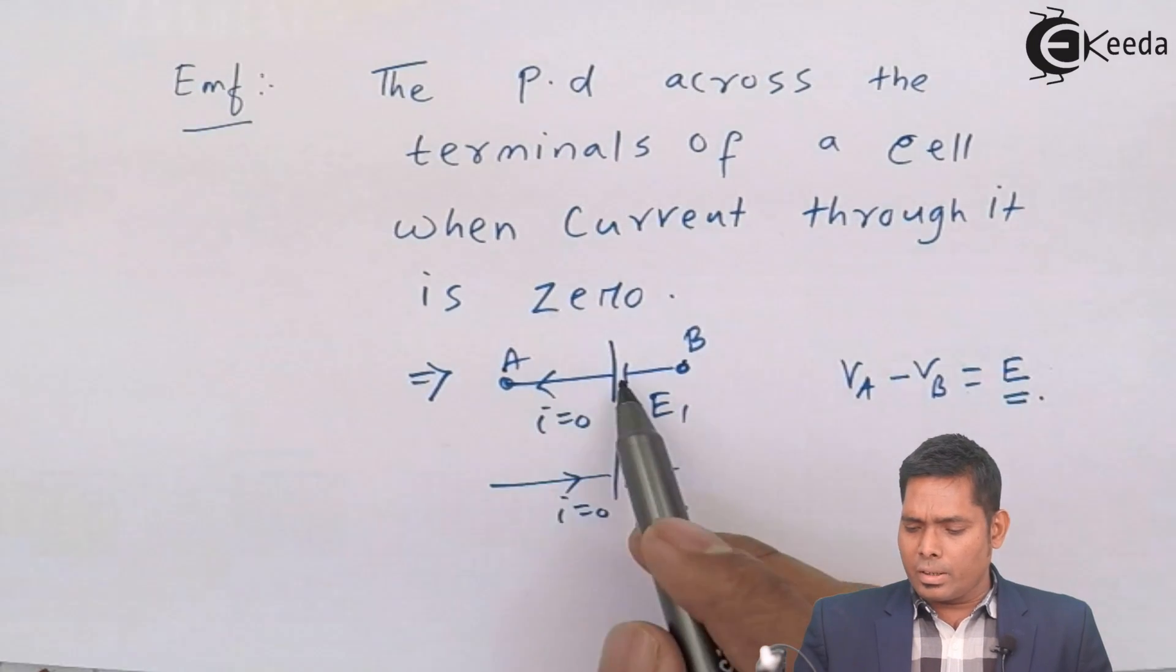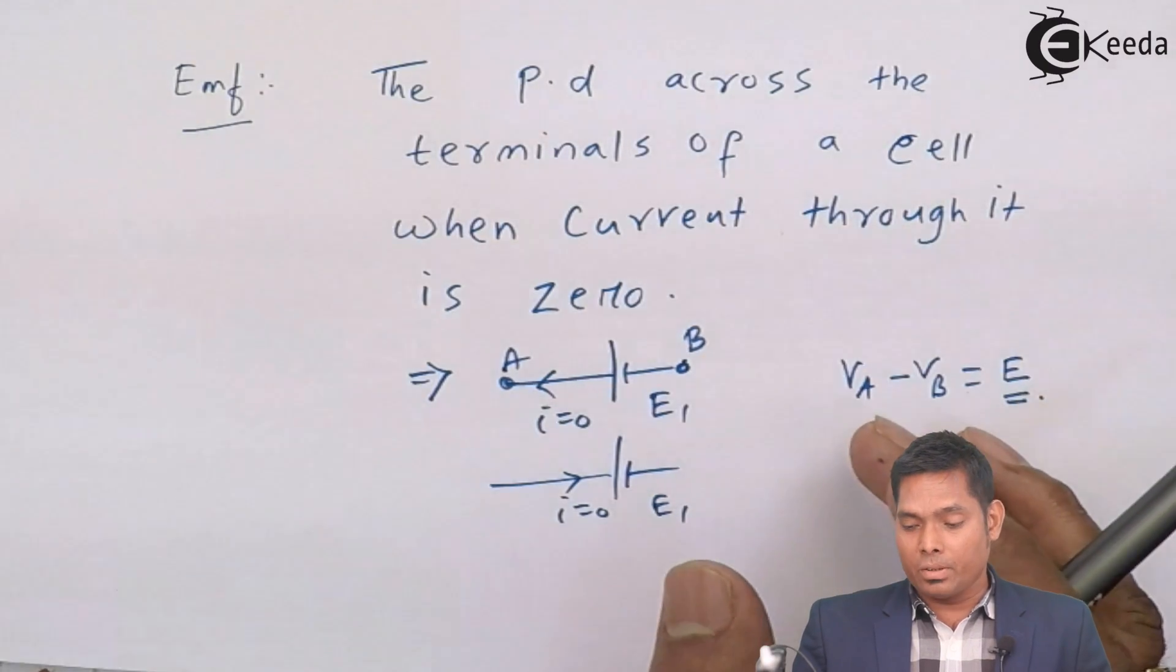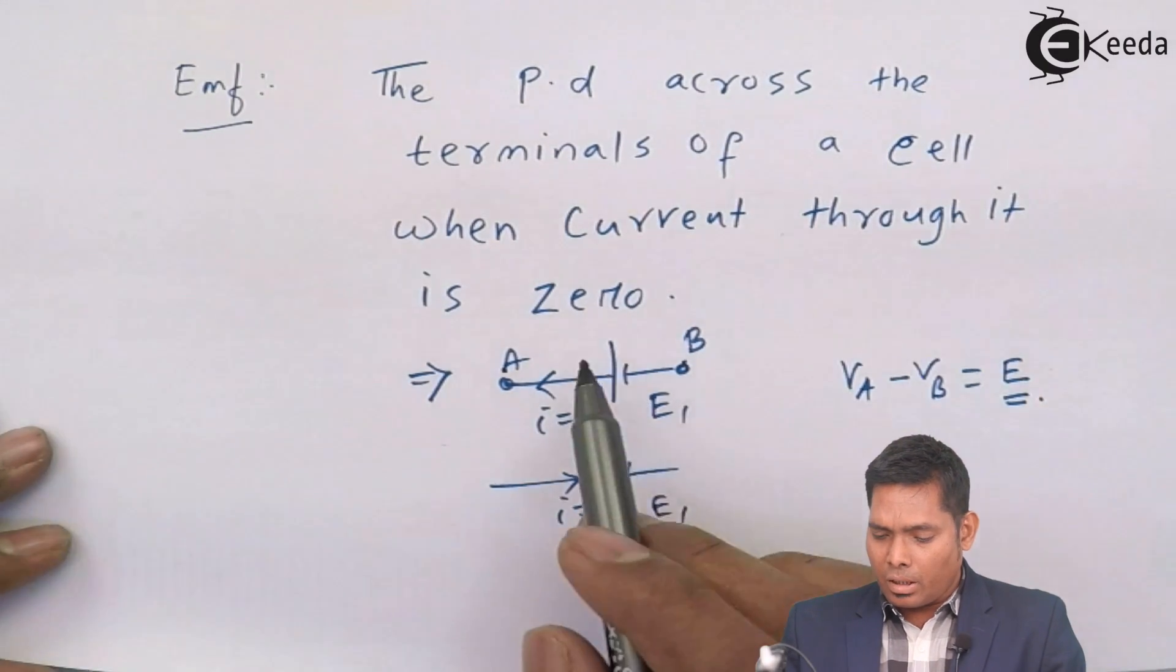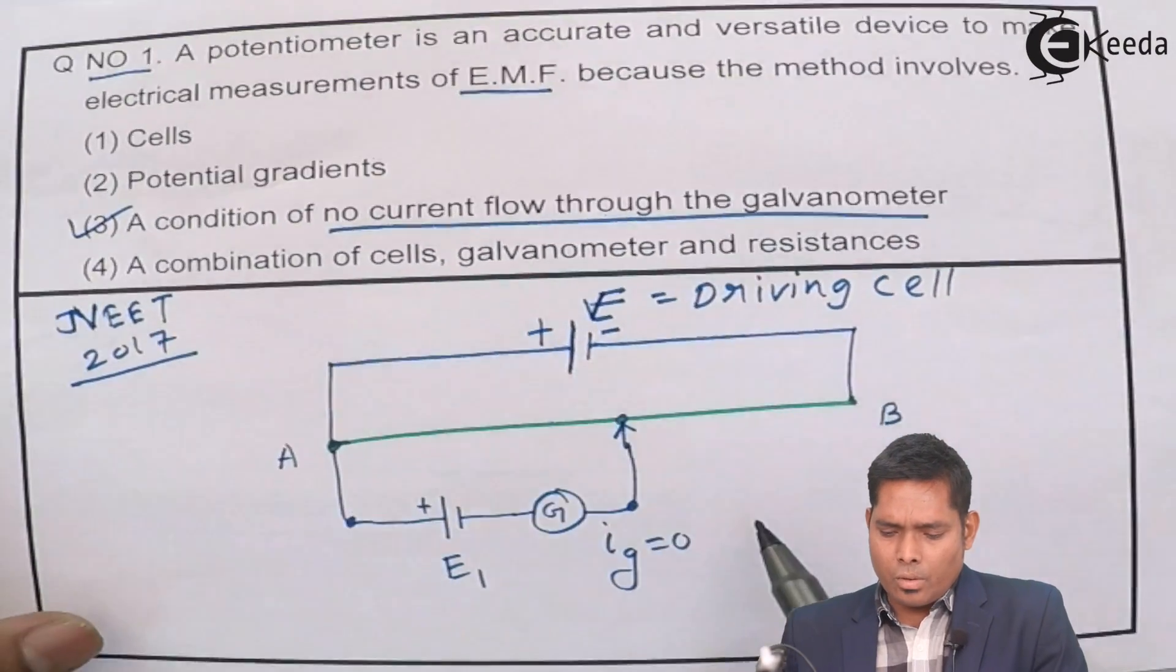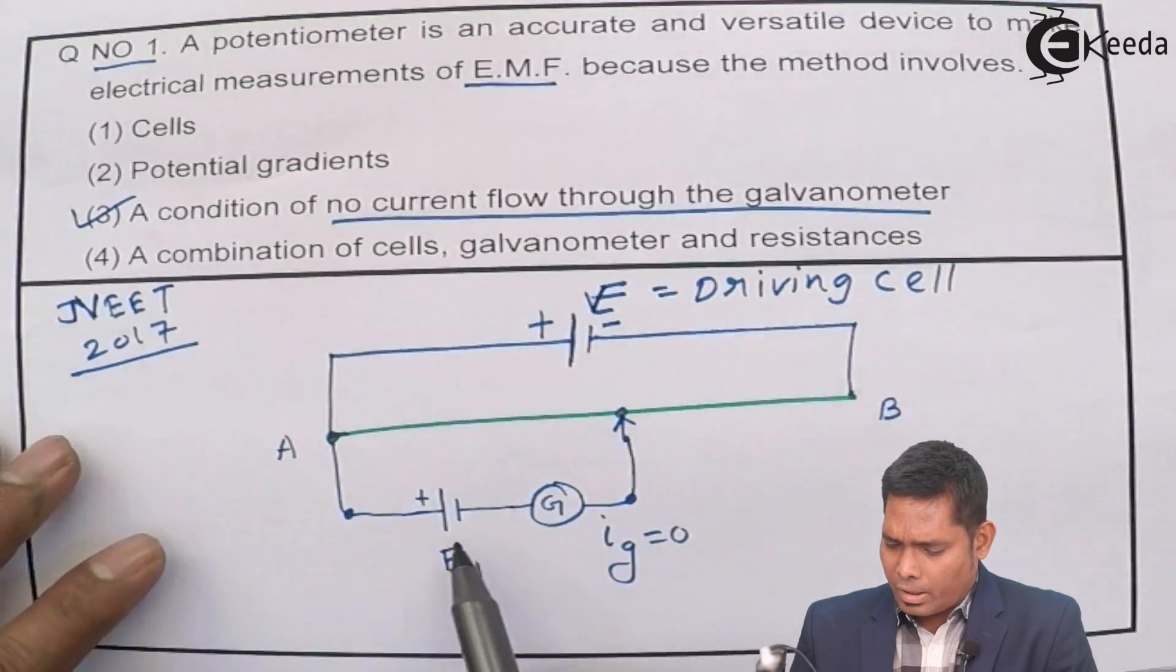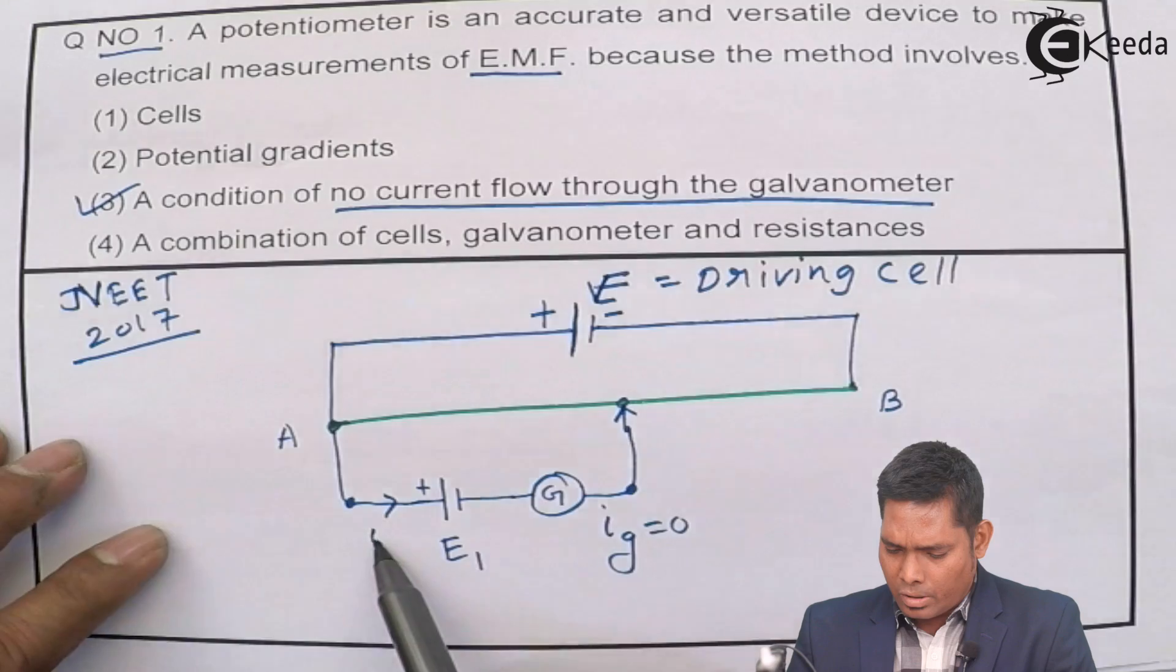But when current flows then there will be a drop here. So then it is not the EMF of the cell. So basic principle is that, so we see here, because the current is not flowing here, current through this is zero, implies that the current is zero here.